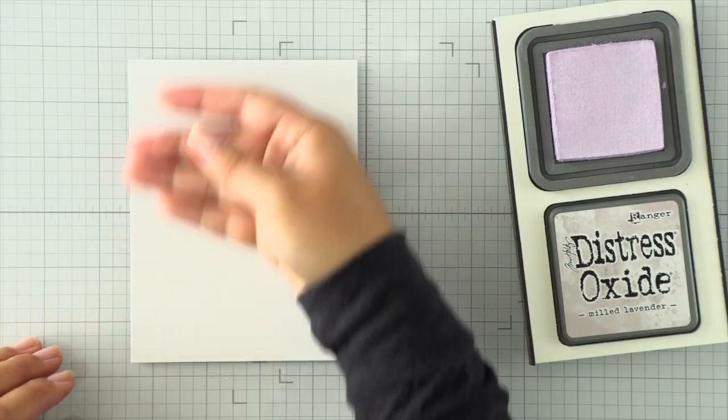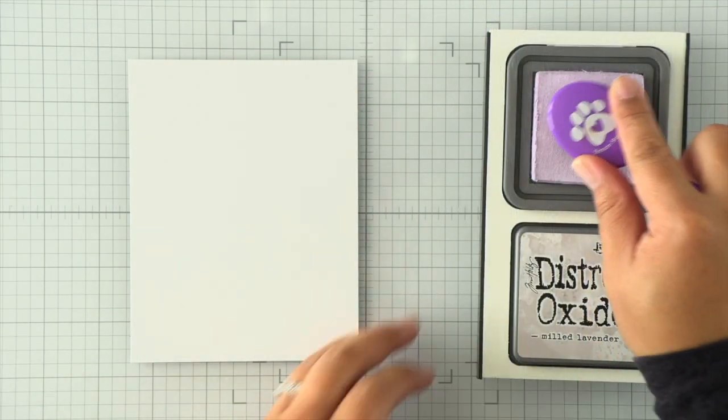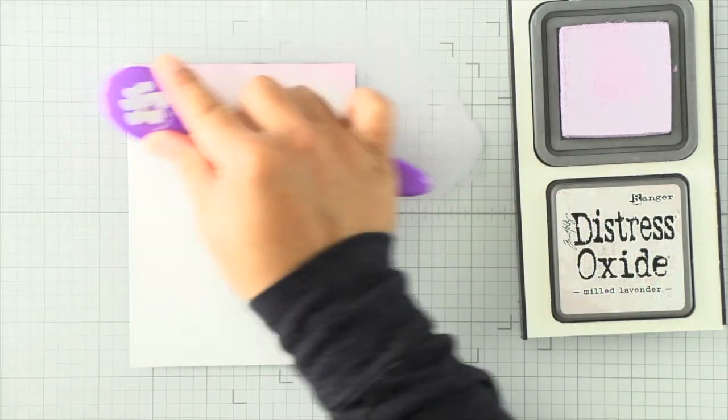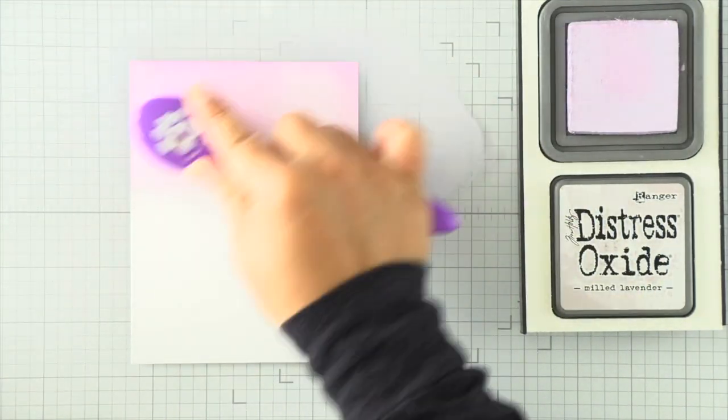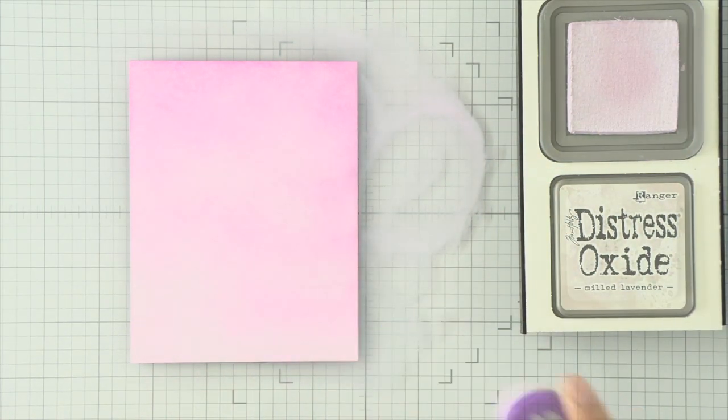The grip mat will grip my paper and hold it down in place while I stencil. I don't have to use anything to hold my paper down or any fancy magnets, so it's a very helpful tool. I'm using my ink stand here to hold my ink pad.